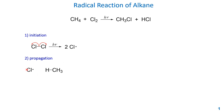In the first propagation step, the chlorine radical generated in the initiation step reacts with methane. I highlight this hydrogen because I'm going to break the single bond between this carbon and this hydrogen. That bond splits its two electrons to form two radicals: one is a hydrogen radical and one is a methyl radical.